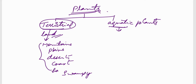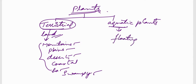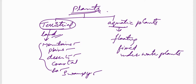Terrestrial plants include: plants present on mountains, plants present in plains, plants present in deserts, coastal areas, heavy rainfall areas, and swampy areas. Similarly, aquatic plants — plants which are present in water — are further divided into three categories: floating plants, fixed plants, and underwater plants. These are the topics you are going to study.